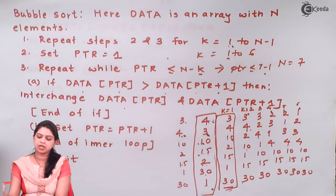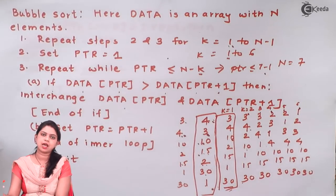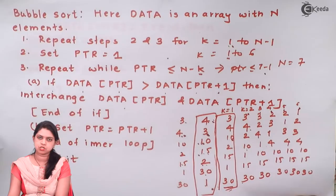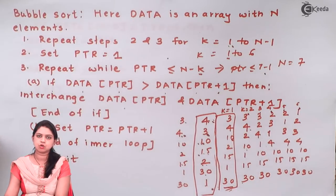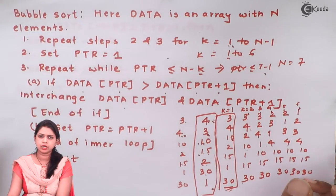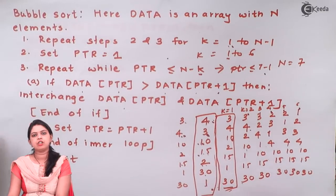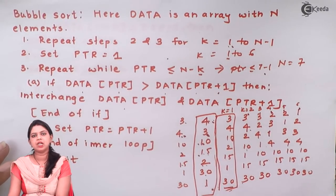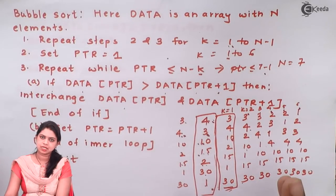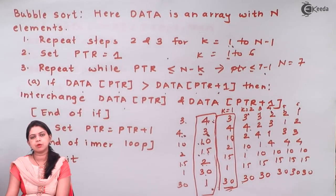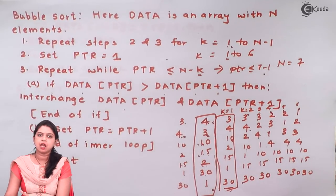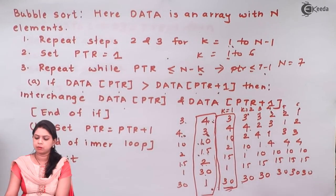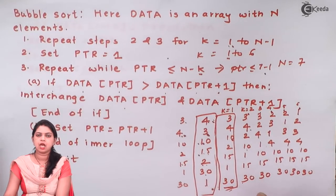In bubble sort, at the first iteration the largest element reaches the end. At the second iteration the second largest element reaches the second-to-last position. At the third iteration the third largest reaches the third-to-last position, and so on. We keep comparing adjacent elements until the list is sorted. The total number of passes is always one less than the total number of elements — for example, if there are 6 elements, the maximum number of passes is 5.